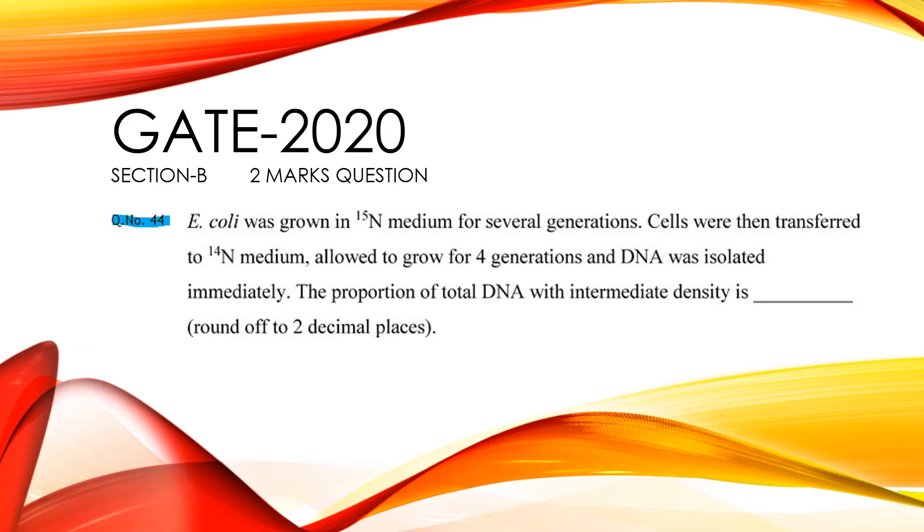E.coli was grown in N15 medium for several generations. Cells were then transferred to N14 medium, allowed to grow for 4 generations, and DNA was isolated immediately. The proportion of total DNA with intermediate density is ___.